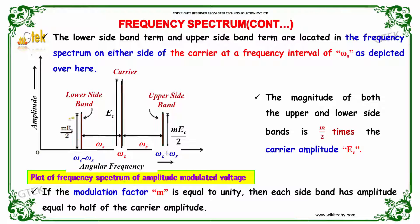The magnitude of both upper and lower sidebands is m/2 times the carrier amplitude E_c. If the modulation factor m is equal to unity, then each sideband has amplitude equal to half of the carrier amplitude.